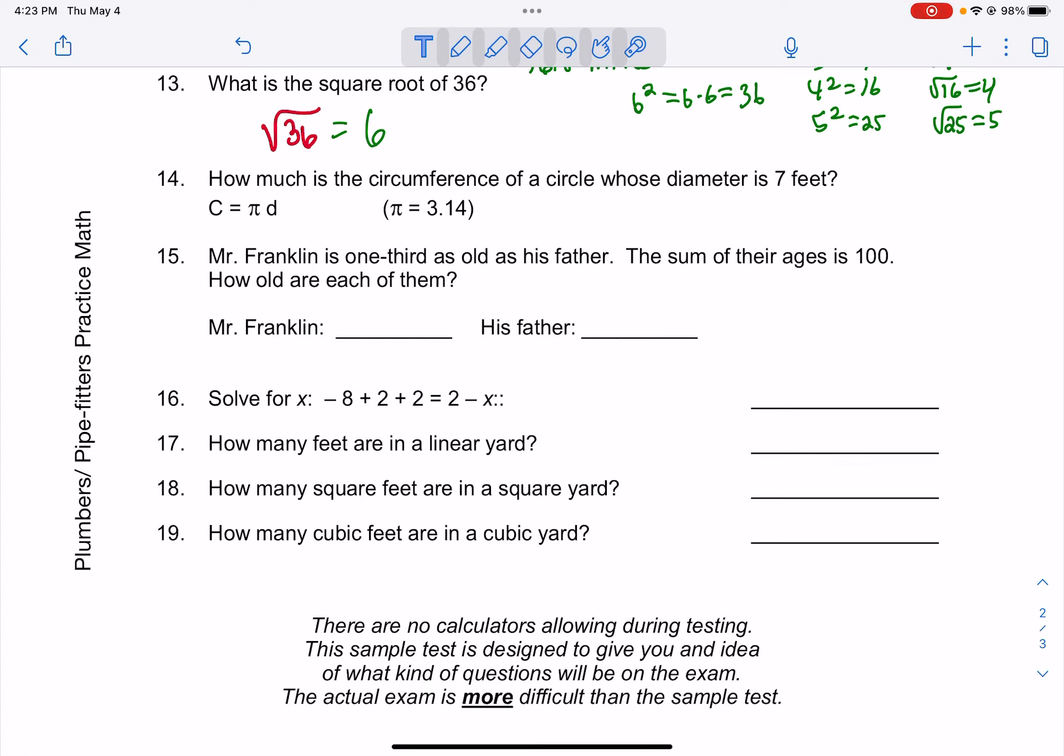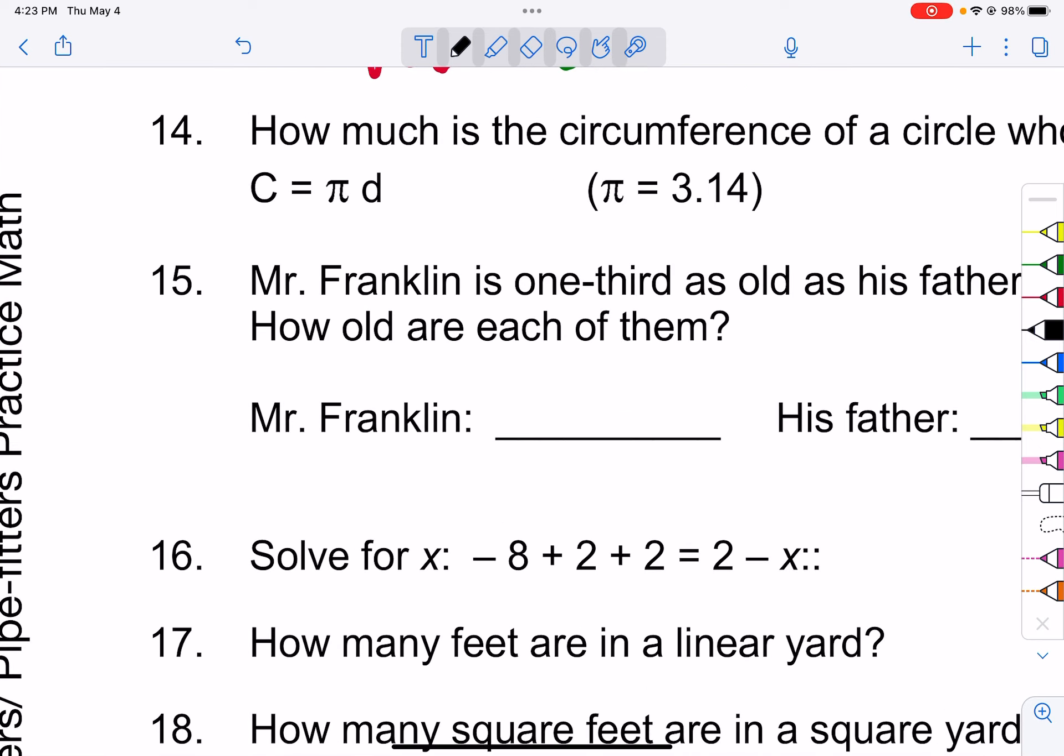So that being said, let's go over this one, and then I will try to make one final video for the plumbers and pipe fitters with a few more difficult things. Let's look at problem 14. It says, how much is the circumference of a circle whose diameter is seven feet? They've even provided the circumference formula there. Circumference is pi times diameter. Sometimes you'll even see that written as two pi r if you're given the radius.